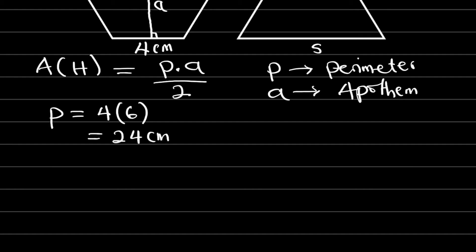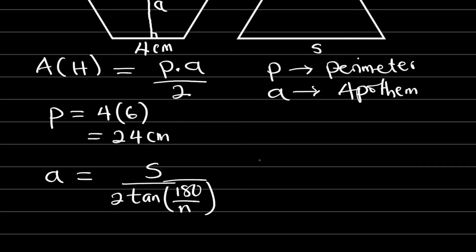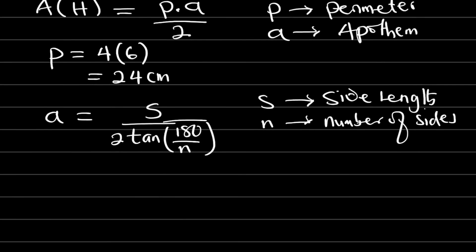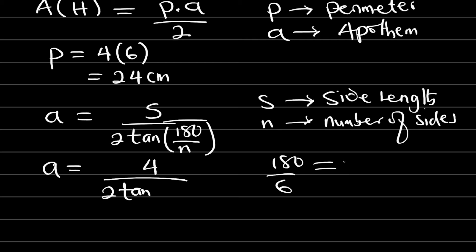Now let us find the apothem — it has a particular formula as well. A is equal to s, the side length, divided by 2, multiplied by tan of 180 divided by n, where n is the number of sides. So now let us go ahead and substitute: a is equal to the side length 4 divided by 2, multiplied by tan of 180 divided by n. Since n is 6, we have 180 divided by 6, which equals 30. So this is tan 30 degrees.